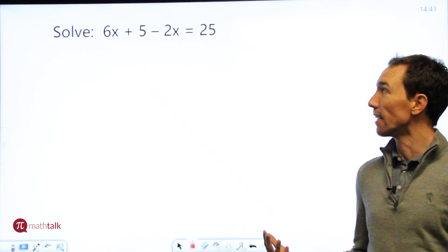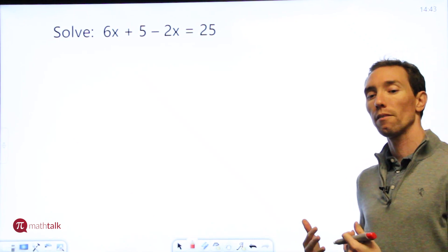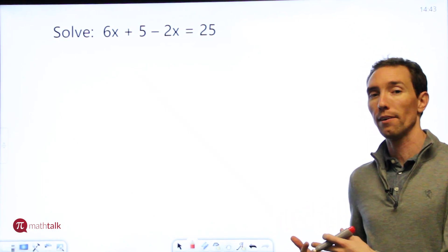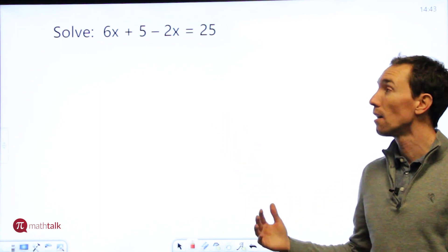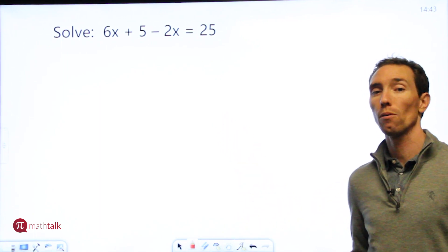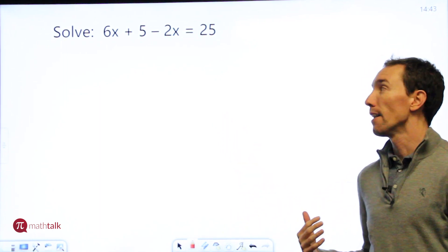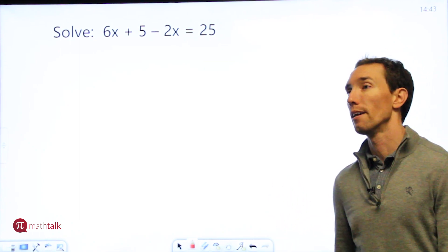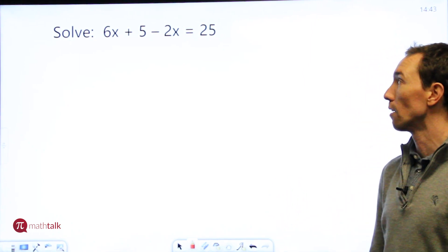When you get into these, the idea is you want to get all the terms that have a variable, like in this case x, on one side of your equal sign and all the numbers on the other side. It just takes some rearranging of the equation and then once you have it set up you can start solving it.